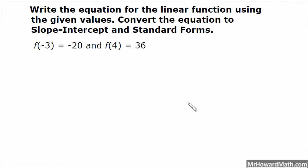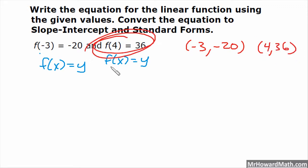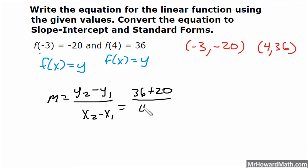Next example says: write the equation for the linear function using the given values, and convert the equation to slope-intercept and standard form. They are giving me two points. Remember that f of x equals y. So they are giving me ordered pairs of negative 3 comma negative 20, and 4 comma 36. So we need slope, and we go to the slope formula. M equals y2 minus y1 over x2 minus x1. That would be 36 minus negative 20, which flips to plus 20, over 4 minus negative 3, which flips to 4 plus 3. So that gives me 56 over 7, which reduces to 8. My slope is 8.